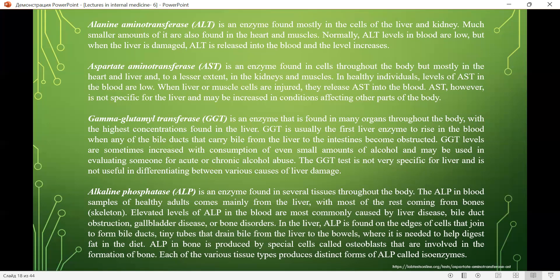Gamma-glutamyltransferase (GGT) is an enzyme found in many organs with higher concentration in the liver. GGT is usually the first liver enzyme to rise in the blood when bile ducts become obstructed. GGT levels may increase with even small amounts of alcohol and may be used as a marker for acute or chronic alcohol abuse. However, the GGT test is not very specific for the liver and is not useful for differentiating between various causes of liver damage.